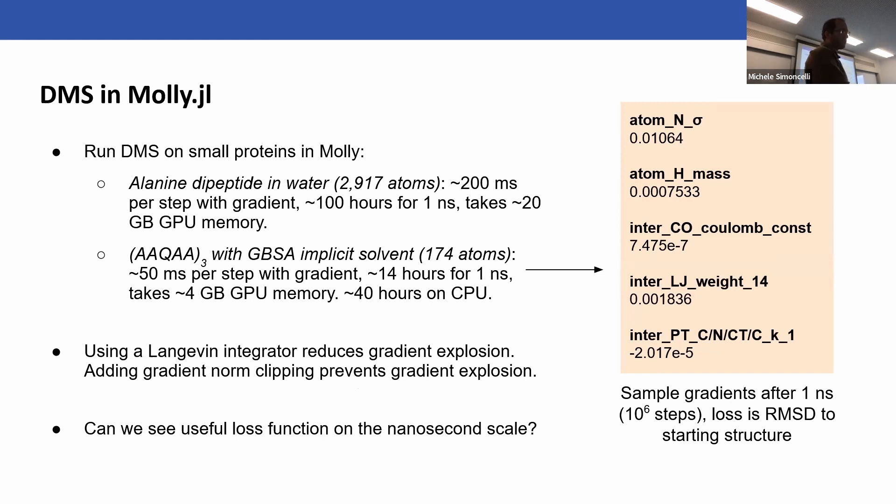Let me give you an idea of running DMS on small proteins. If you ran an alanine dipeptide, which is a two-residue peptide in water with about 3000 atoms, it takes about 200 milliseconds per step. But we're constantly working on ways to make that faster and we have some ideas. If you look at implicit solvent, which I'll describe in a minute, you can go much faster. A 15-residue peptide is about 50 milliseconds per step. On the right are some examples of the gradients you get out. For instance, the one on the top means that the gradient of the RMSD to start structure with respect to that parameter sigma on N is positive, which means that as you increase that parameter, the RMSD increases. You can get that kind of gradient for all the parameters in your system, including some slightly weird ones like temperature - that kind of strange things you might not necessarily expect.